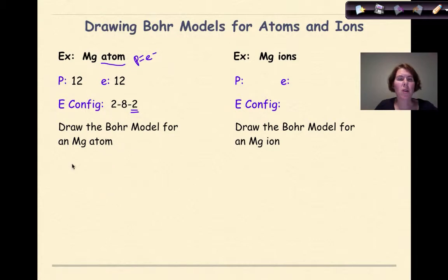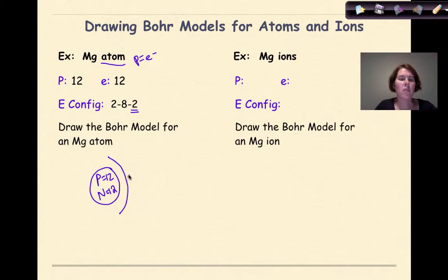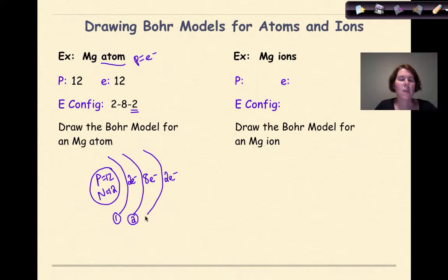To draw the Bohr model for a magnesium atom: protons = 12, neutrons = 12 — that's the nucleus. From the electron configuration, I have 2 electrons in the first shell, 8 electrons in the second shell (maxed out), and finally 2 valence electrons in the third shell. These are the electrons that would be involved in bonding.